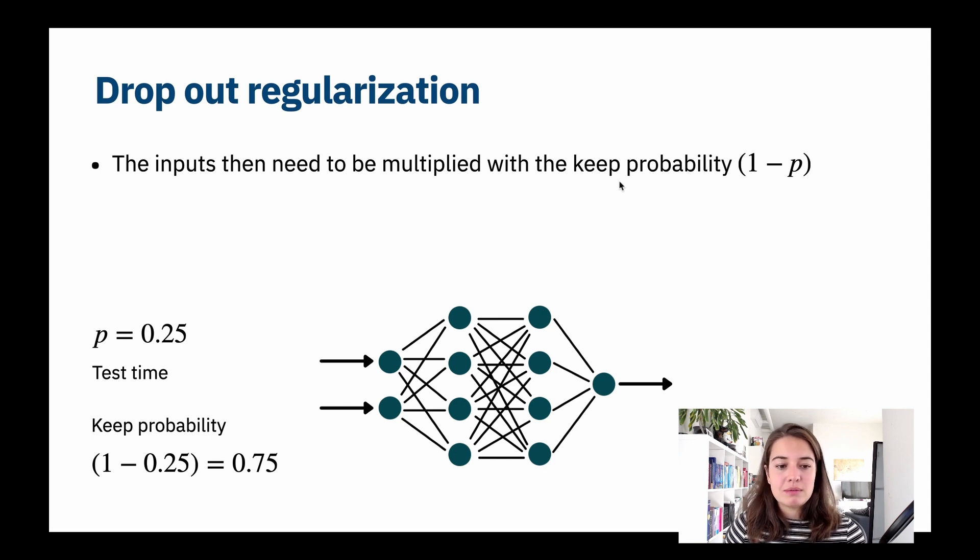During test time we have the whole network, and the keep probability here, because our dropout rate was 0.25, our keep probability is 0.75. What we need to do is basically when we are calculating the input that goes into this neuron, we're going to have to multiply our input with the keep probability.